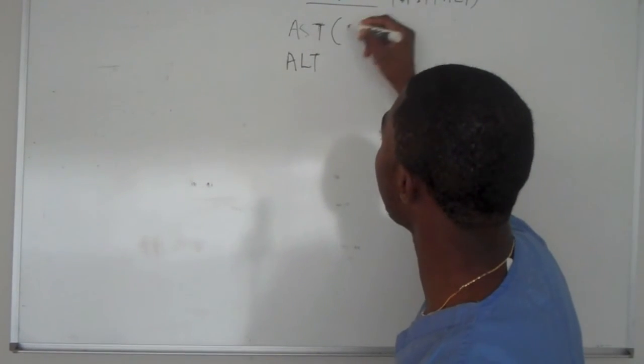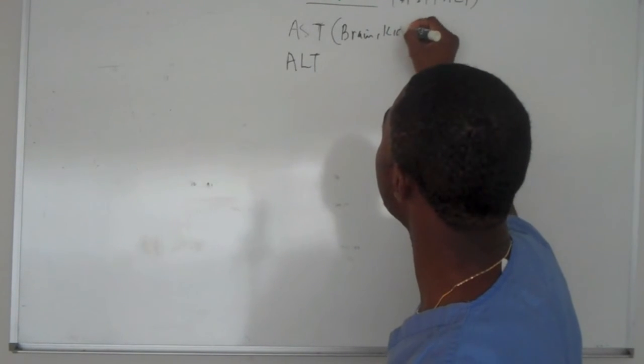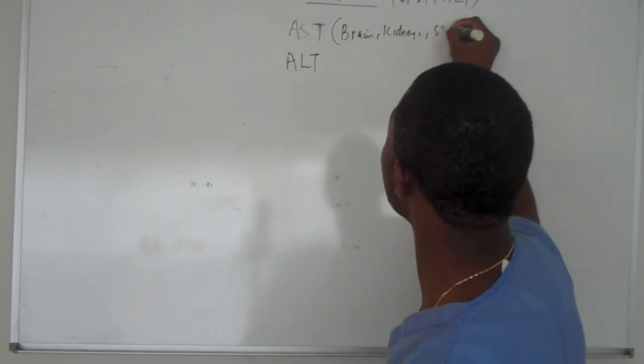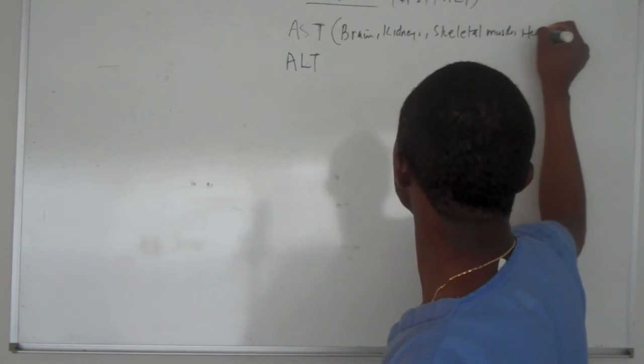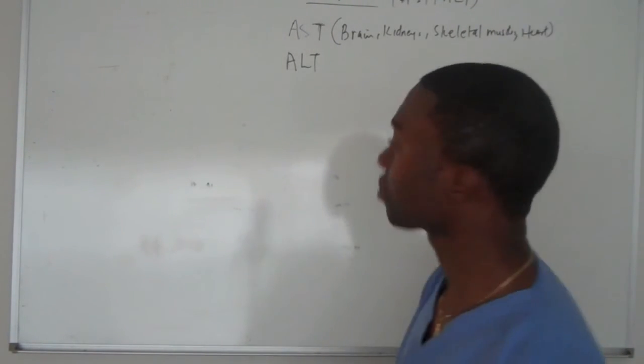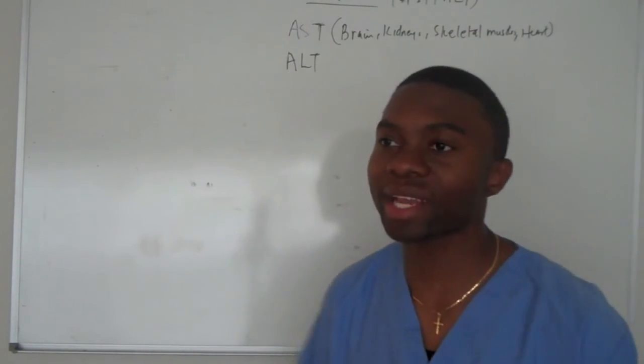AST, you probably, you can find it in brain. You can find it in your kidneys, skeletal muscles, in your heart. Right? So AST is not specific. If a patient gets an elevated AST, big deal, who cares?